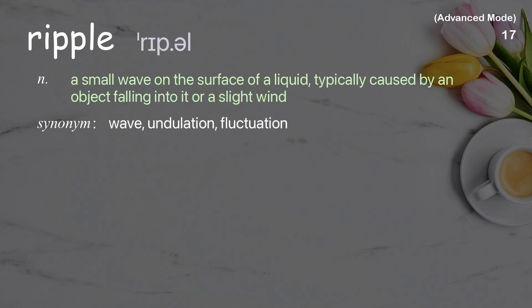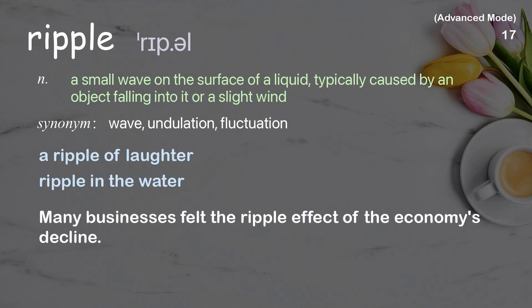Ripple: A small wave on the surface of a liquid, typically caused by an object falling into it or a slight wind. Examples: A ripple of laughter, Ripple in the water. Many businesses felt the ripple effect of the economy's decline.